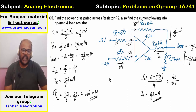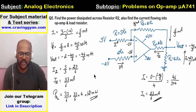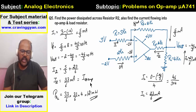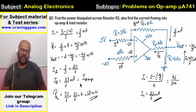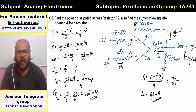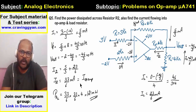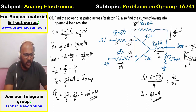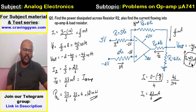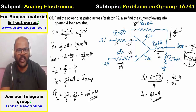The current flowing INTO the op-amp is 33/6 milliampere. The current flowing OUT of the op-amp is minus 33/6 milliampere. The current through the load resistor is 23/6 milliampere.